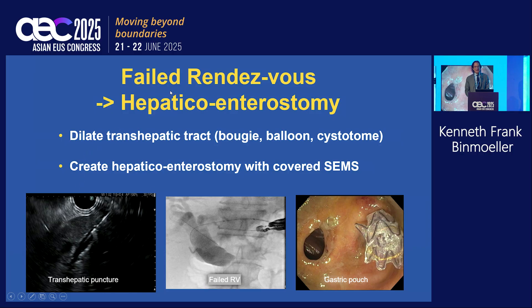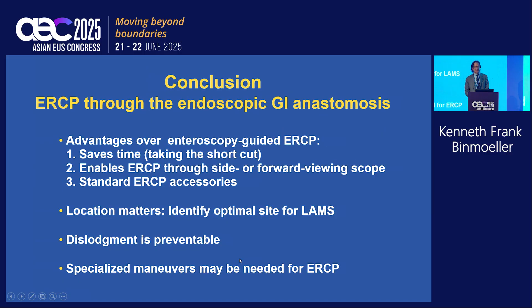If the rendezvous fails, you need to be prepared to create a hepaticoenterostomy. Dilate the transhepatic tract using a bougie, balloon, or cystotome, then create a hepaticoenterostomy with a covered SEMS. In this patient who failed the rendezvous, with a guide wire in place and unable to cross the stricture, a fully covered expandable stent was placed in the gastric pouch draining the intrahepatic ducts.